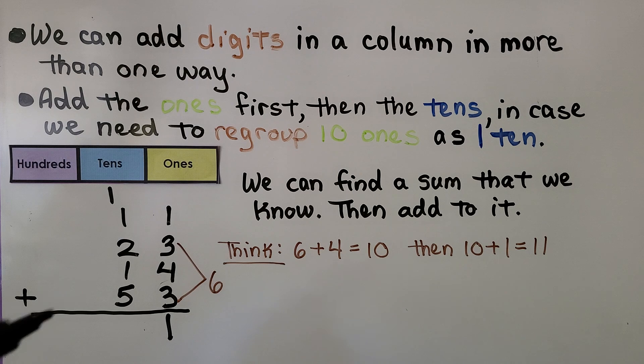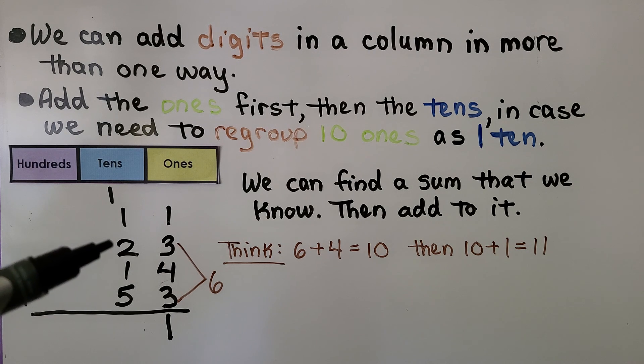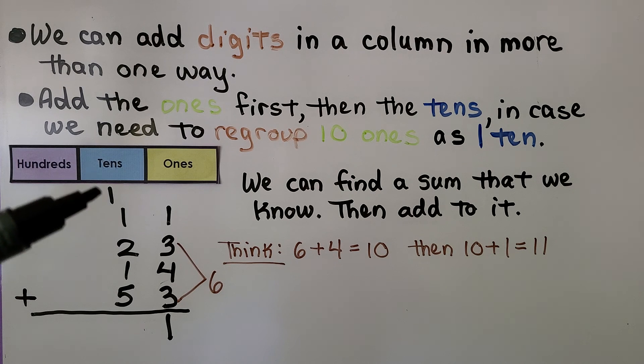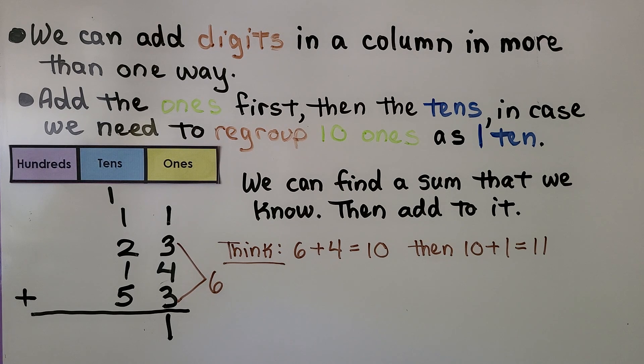Now we add the tens column. We have 5 tens plus 2 tens, that's 7 tens, 8, 9, 10 tens. And remember, 10 tens are equal to 100. So now we have a 1 in the hundreds place and a 0 in the tens place. It's equal to 101.